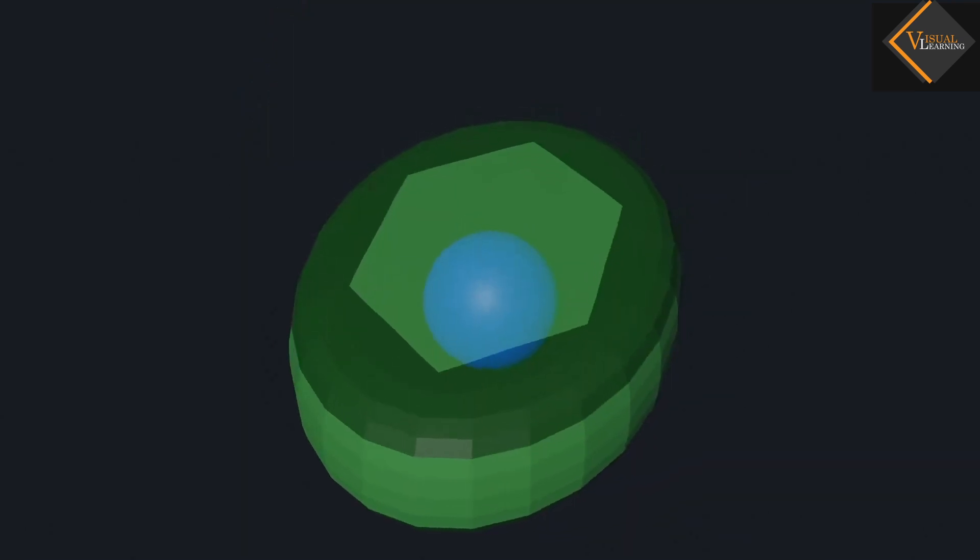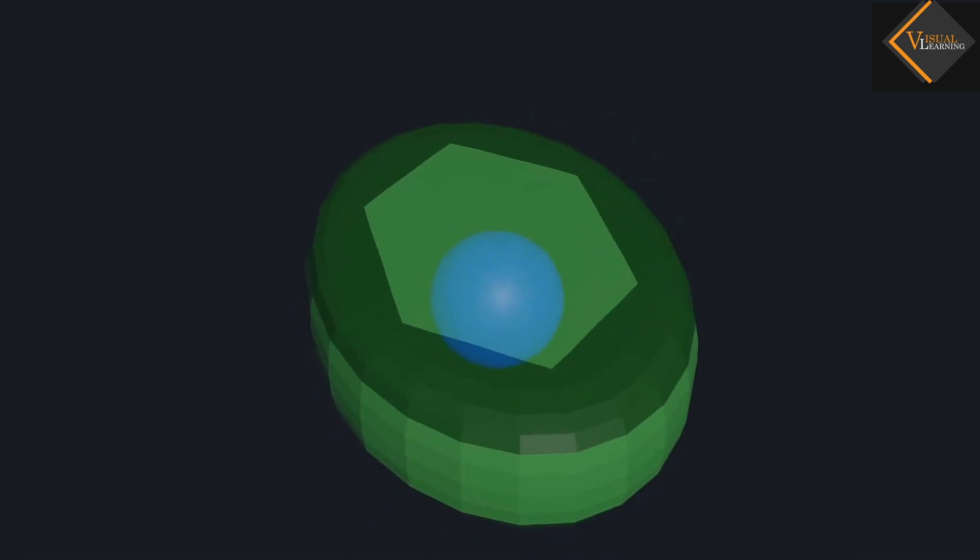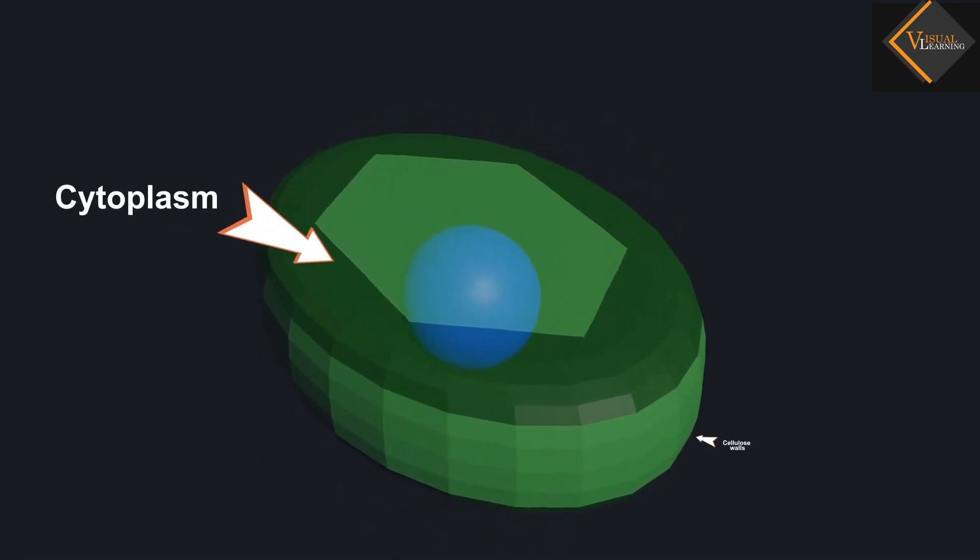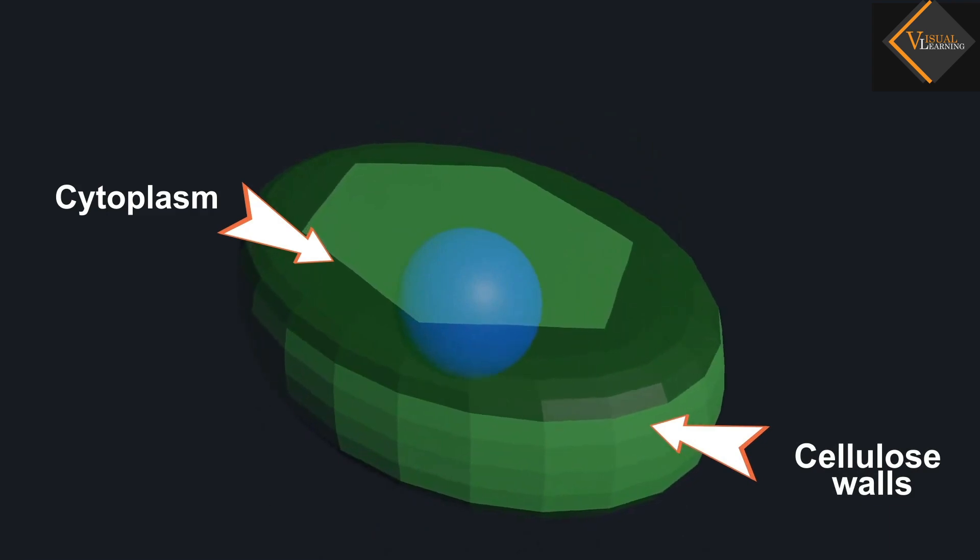Cells of meristematic tissue are very active. They have dense cytoplasm, thin cellulose walls, and prominent nuclei.